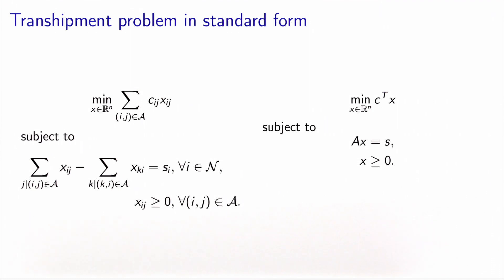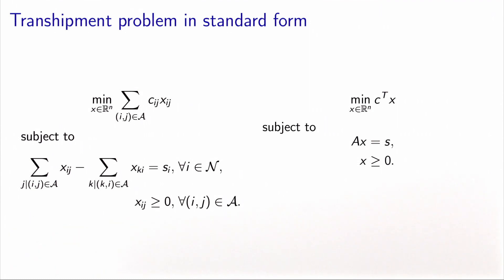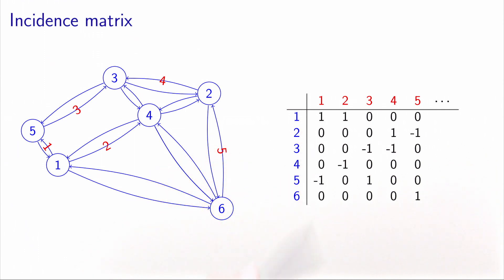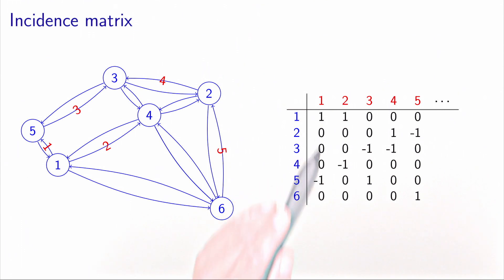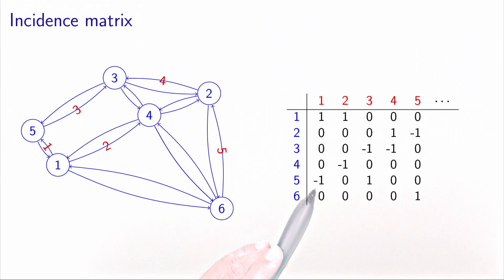We consider the transshipment problem written in standard form. The incidence matrix has as many rows as nodes in the network, as many columns as arcs in the network, and each column contains exactly two non-zero entries: a one corresponding to the upstream node of the arc, and a minus one corresponding to the downstream node of the arc.